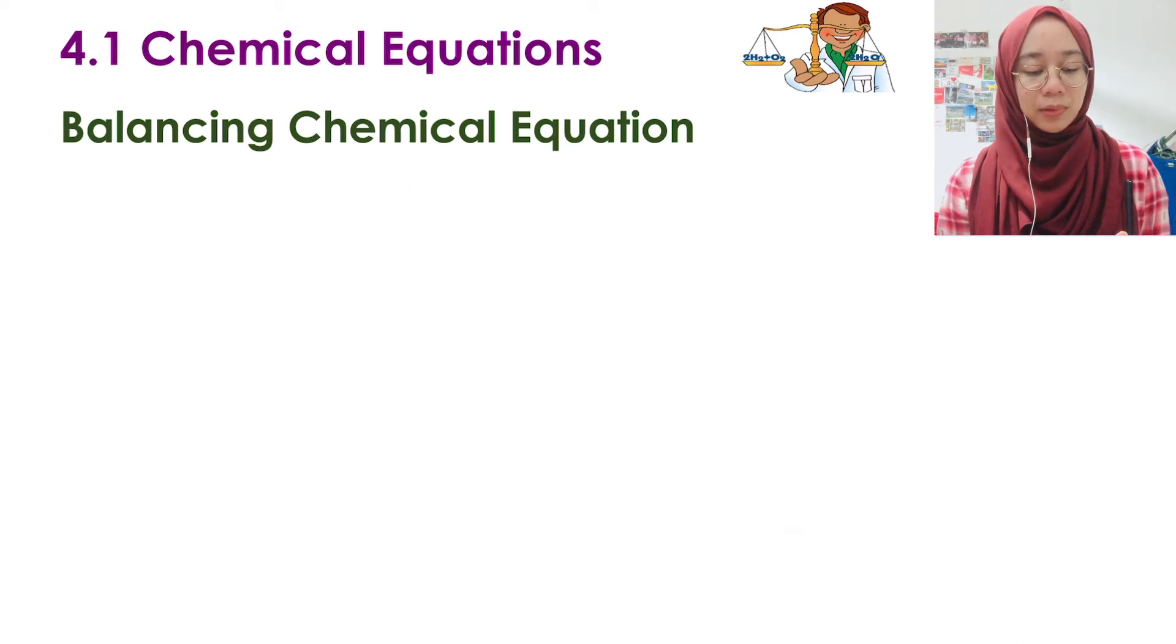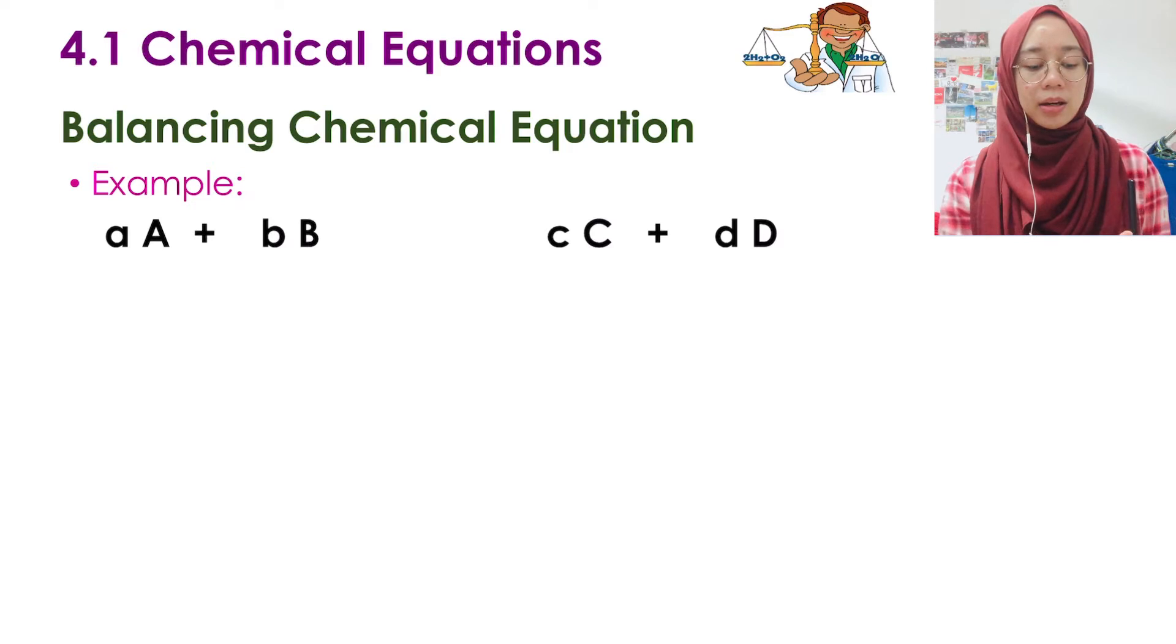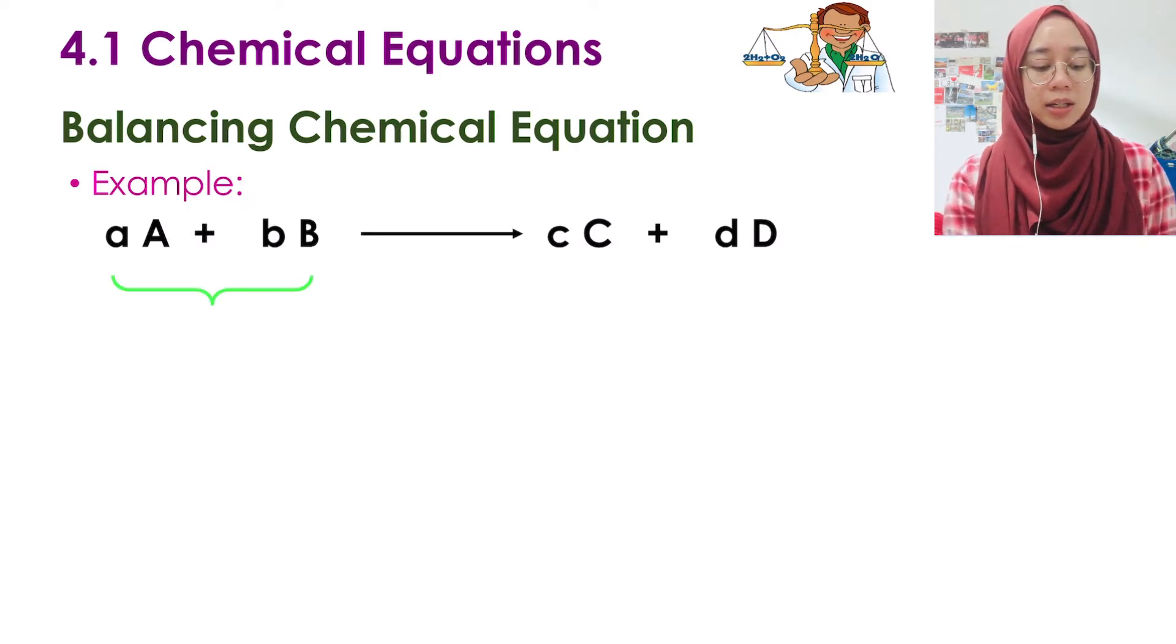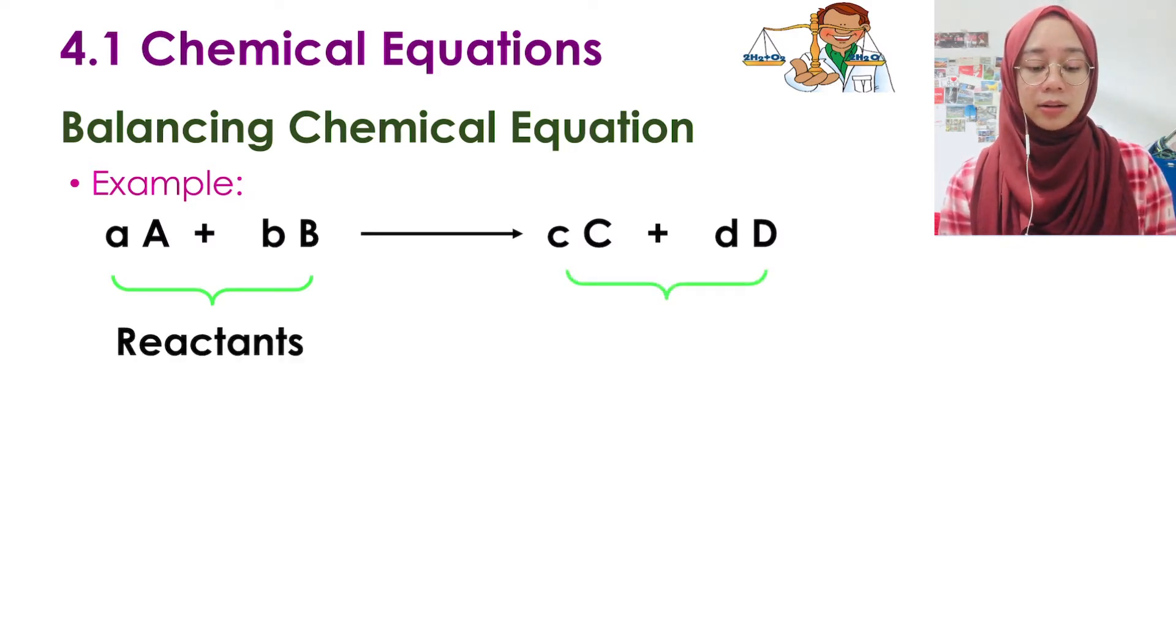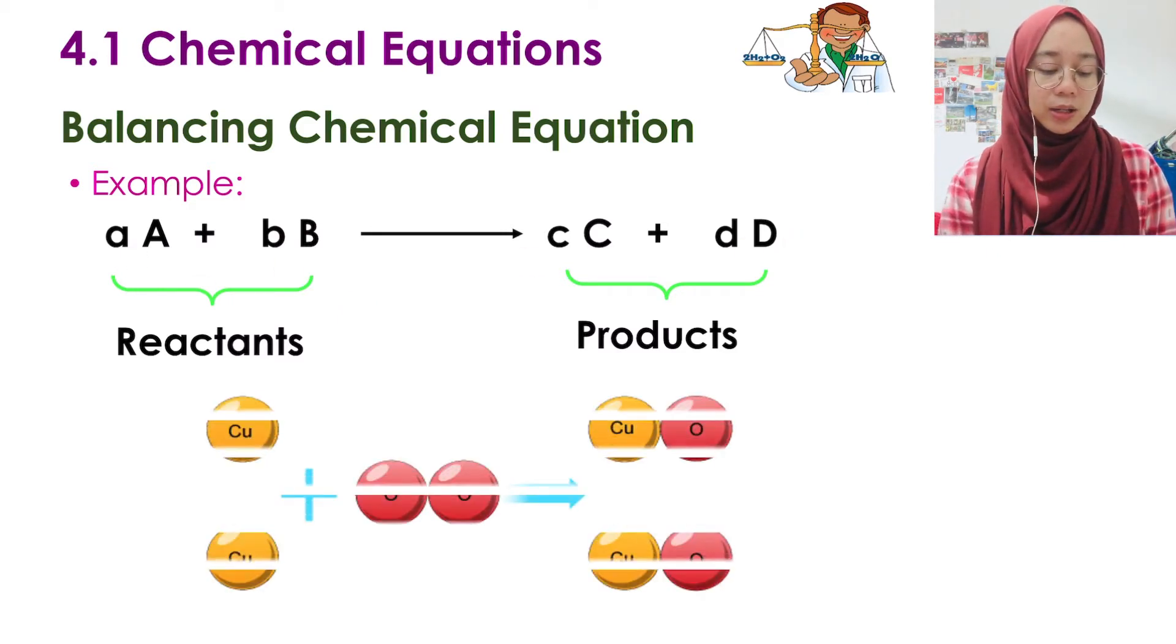For example, we have A, B, C and D here. A will react with B, producing C and also D. So on the left side which is A and B is the reactant. Meanwhile, on the right side, C and D is what we call as the products. The reactants and products are the ones with capital letters. What about the lowercase letters? We'll look at that next.